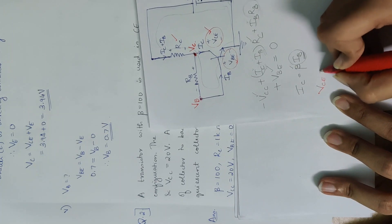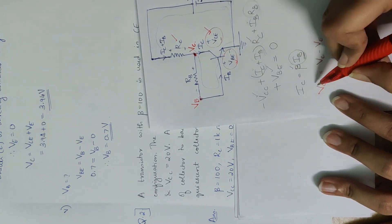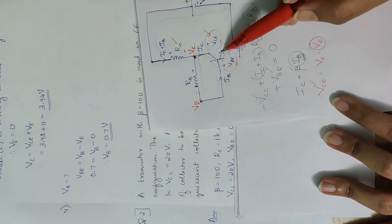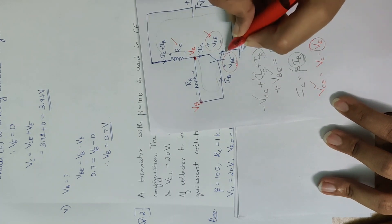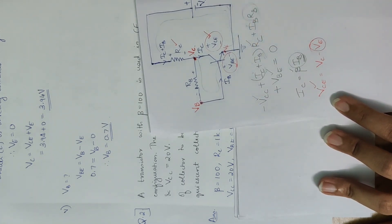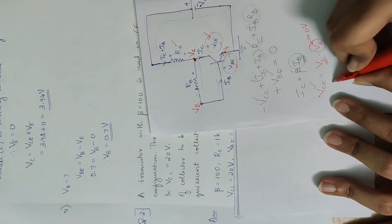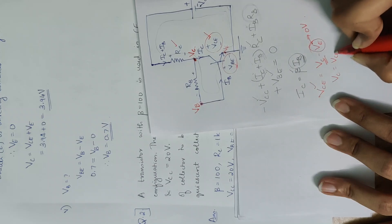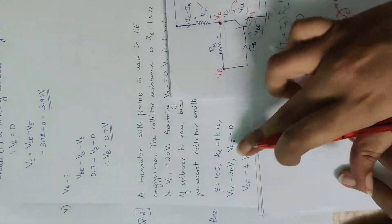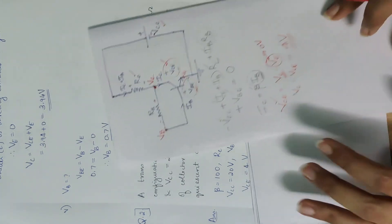VCE equals VC minus VE. The emitter voltage VE is directly connected to ground, so VE equals 0V. Therefore VC equals VCE plus 0V, which equals VCE. Since VCE is 4V, VC equals 4V.